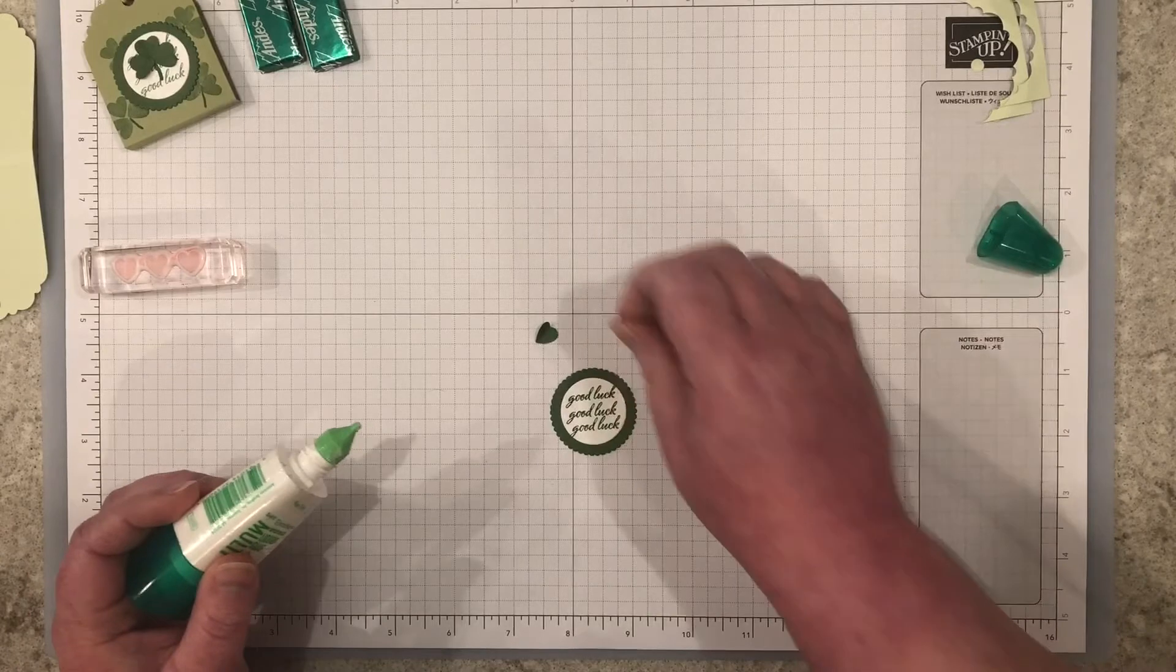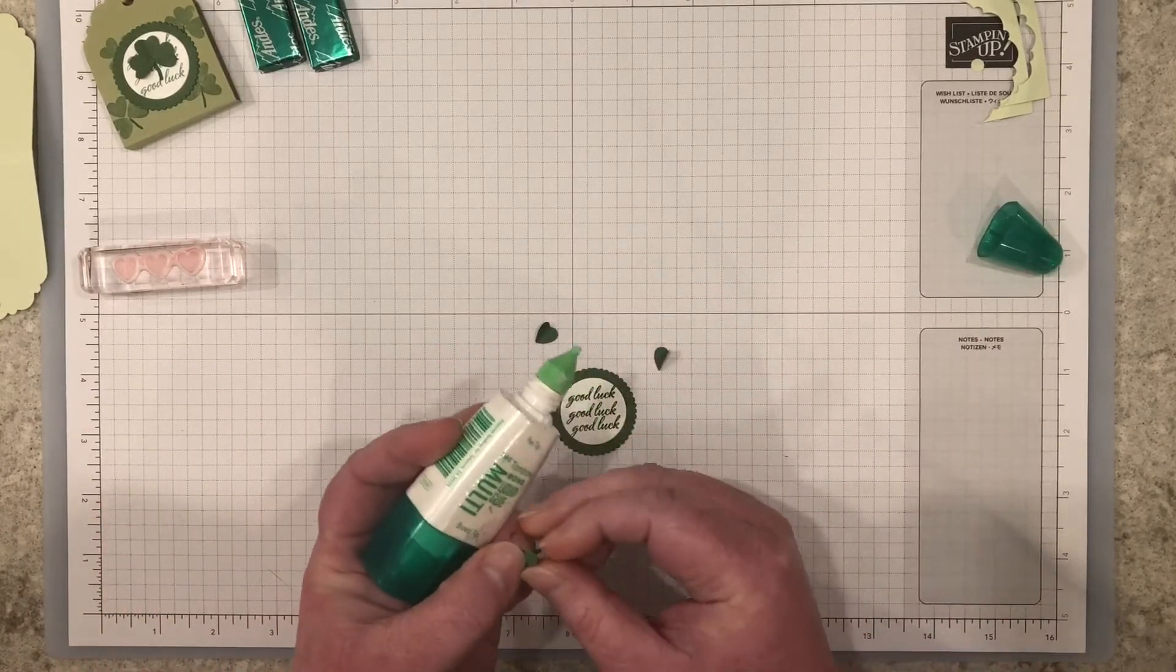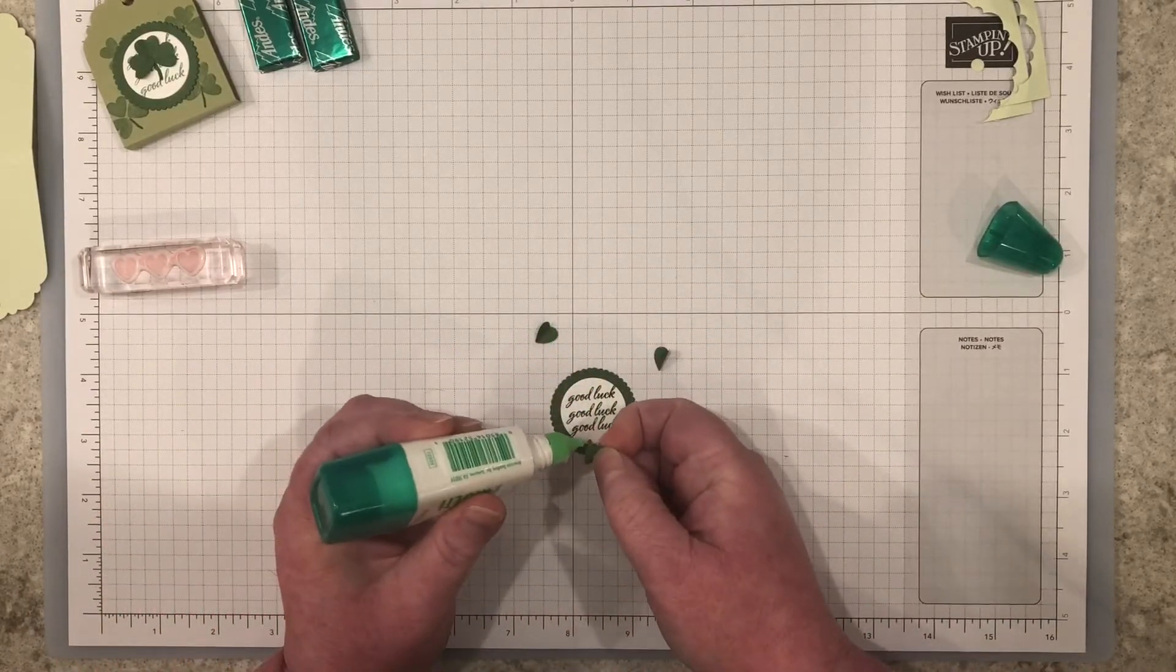Next, glue your shamrock leaves to the circle in a shamrock pattern.